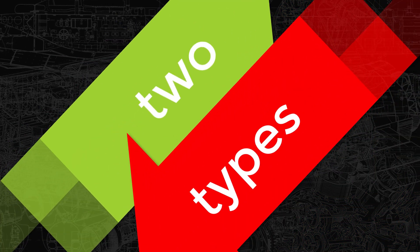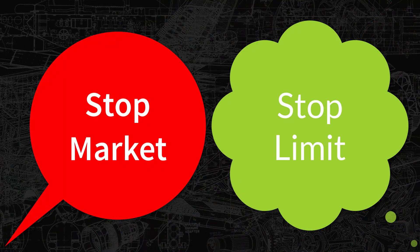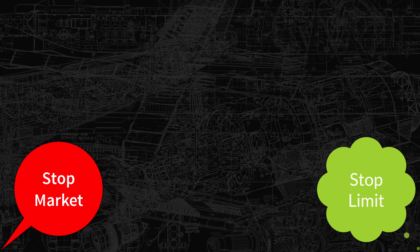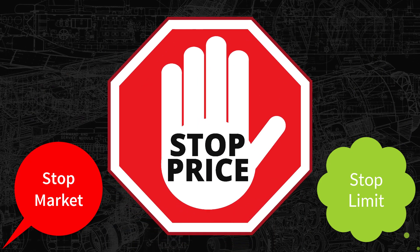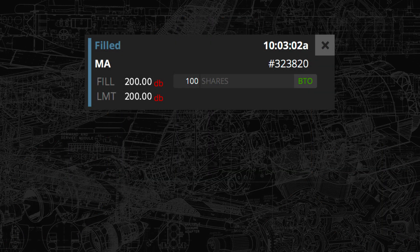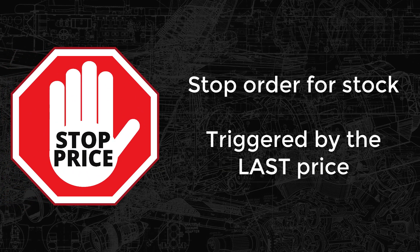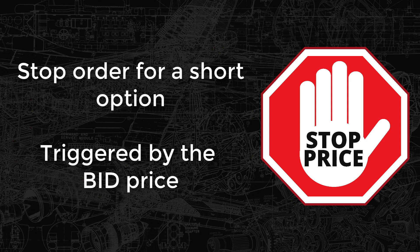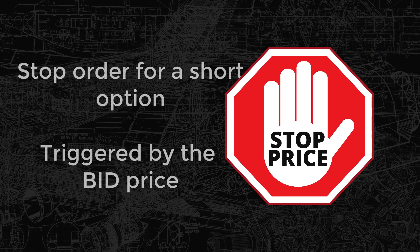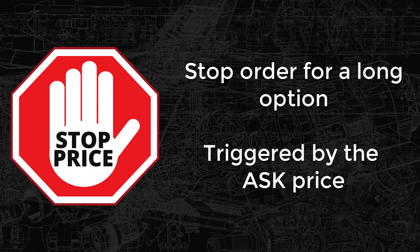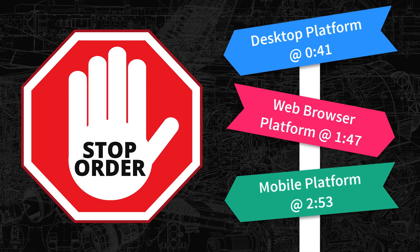There are two types of stop orders you can use: a stop market and a stop limit. Both operate similarly as they are both triggered by the stop price. Stop orders can be used to close a long or short stock position or single leg option position. Stop prices for closing stock orders are triggered by the last price. For option buy to close orders, the stop is triggered by the bid, and for option sell to close orders, the stop is triggered by the ask. In this tutorial, we'll go over how to set up stop orders in all three platforms.